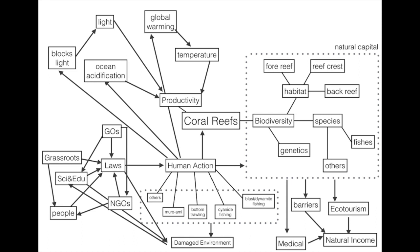Human action can also block light, as human activity can result in pollution and sedimentation. The blockage of light can lead to an insufficient amount of light for photosynthesis. Human action also results in global warming, which affects the temperature of the oceans. Coral reefs are very sensitive, and even the slightest change in temperature can alter them.